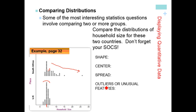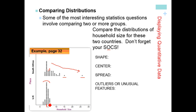For outliers or unusual features, remember the O in SOCS doesn't just mean outliers — it can also refer to gaps, groups, or clusters of data. Here, outliers do seem to be something we want to talk about. These two points seem to be far away from the rest of the data in the South Africa graph — around 23 in a household and around 15. It doesn't appear to be any outliers in the UK data, but that's a judgment call — that data seems to be a lot closer together.